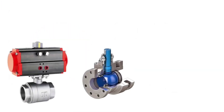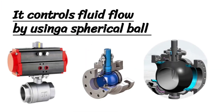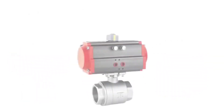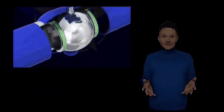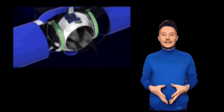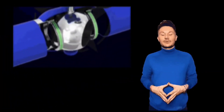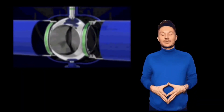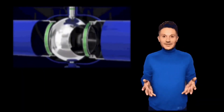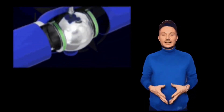The third type is the ball valve. Ball valves control fluid flow with a spherical ball. Ball valves are very durable and reliable. Its ball is rotated to start or stop the fluid flow — the ball rotates, and the fluid flow passes and stops.